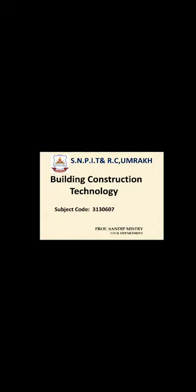Number four is masonry wall or column. Walls are constructed using building units such as brick, stone, or concrete block bonded together with mortar — this is termed masonry. Masonry is a superstructure element used to maintain privacy, enclose or divide floor space into rooms as required, and provide privacy, security, and protection against sun, wind, and rain.